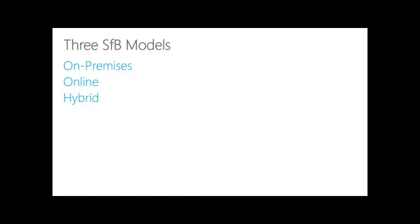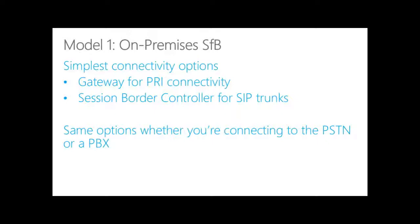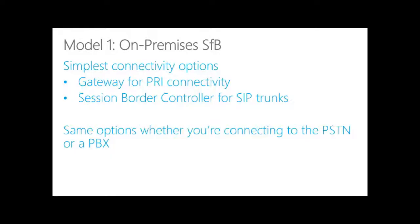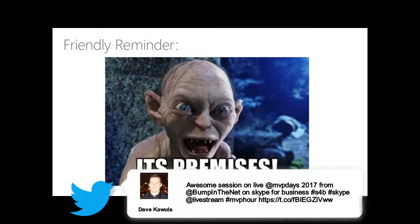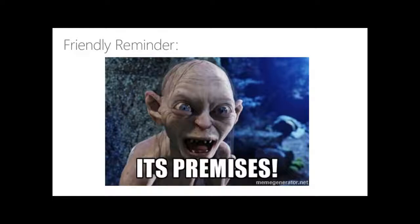There are three models for deploying Skype for Business. On-premises — all of your infrastructure is within your own building. Online — hosted by Microsoft. And a hybrid of the two. On-premises Skype is fading away, particularly for smaller businesses outside of Canada where Microsoft has more services available. On-premises is where we see gateways to connect to PRIs and session border controllers for connecting to SIP trunks. And by the way — it's 'on-premises' or just 'on-prem.'